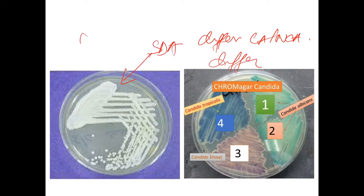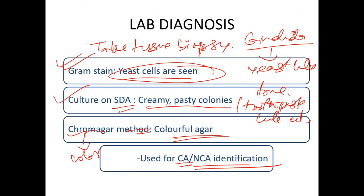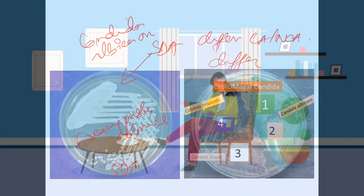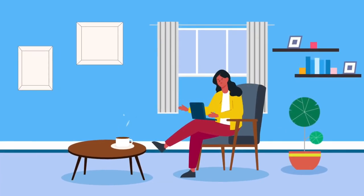On SDA, Candida albicans shows creamy pasty colonies, as you can see in this picture.